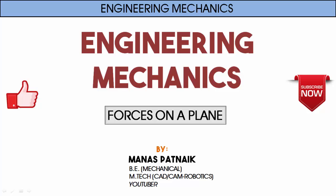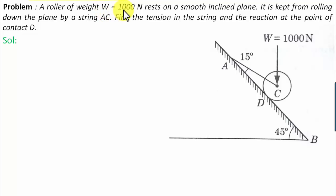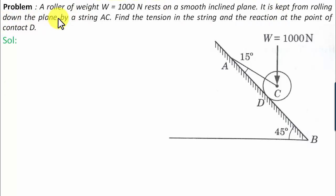Hi there guys, hope you're doing well. This is your friend and tutor Manas. A roller of weight W equal to 1000 Newtons rests on a smooth inclined plane. It is kept from rolling down the plane by a string AC. Find the tension in the string and the reaction at the point of contact D.